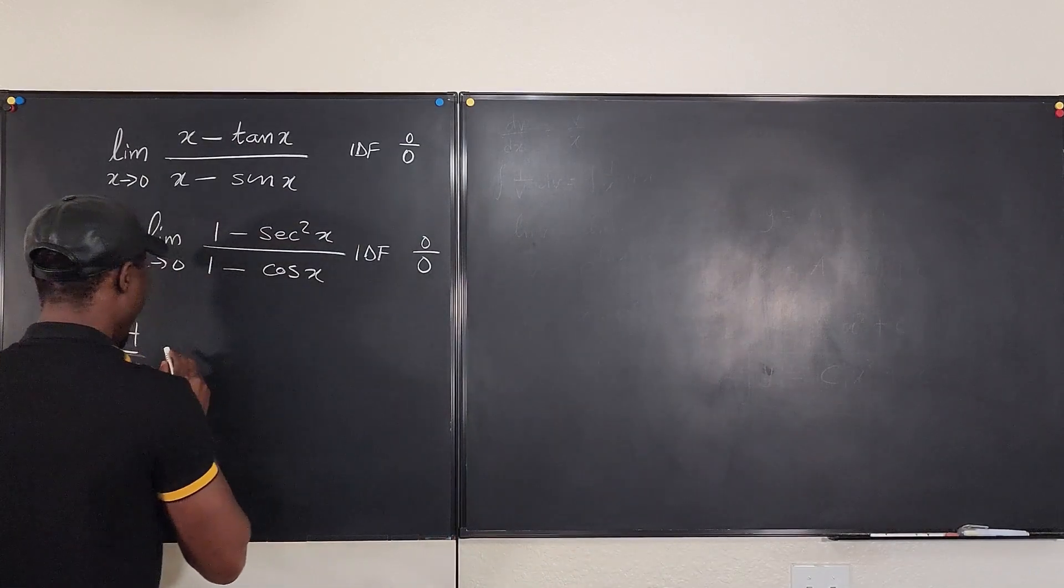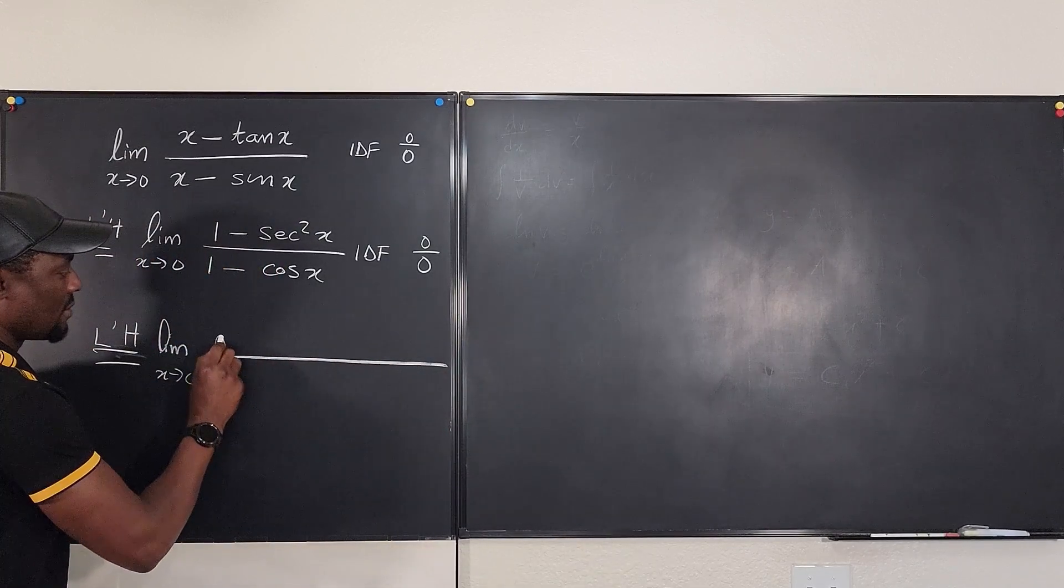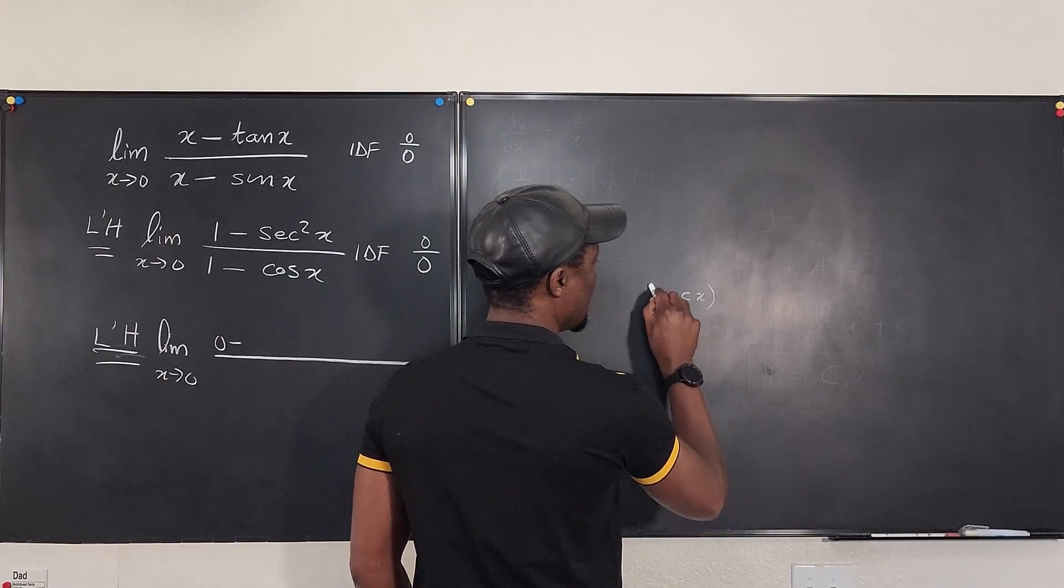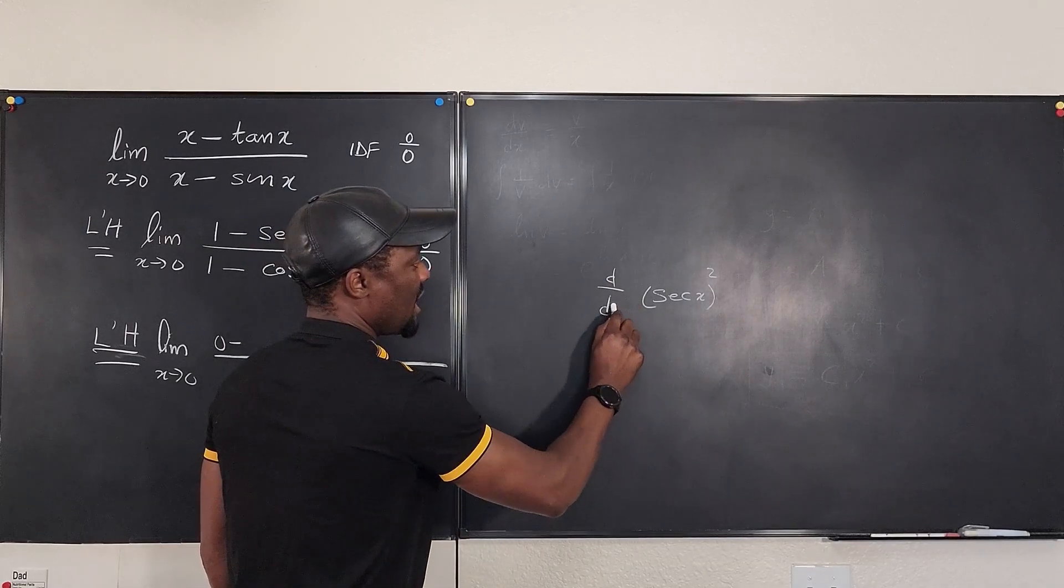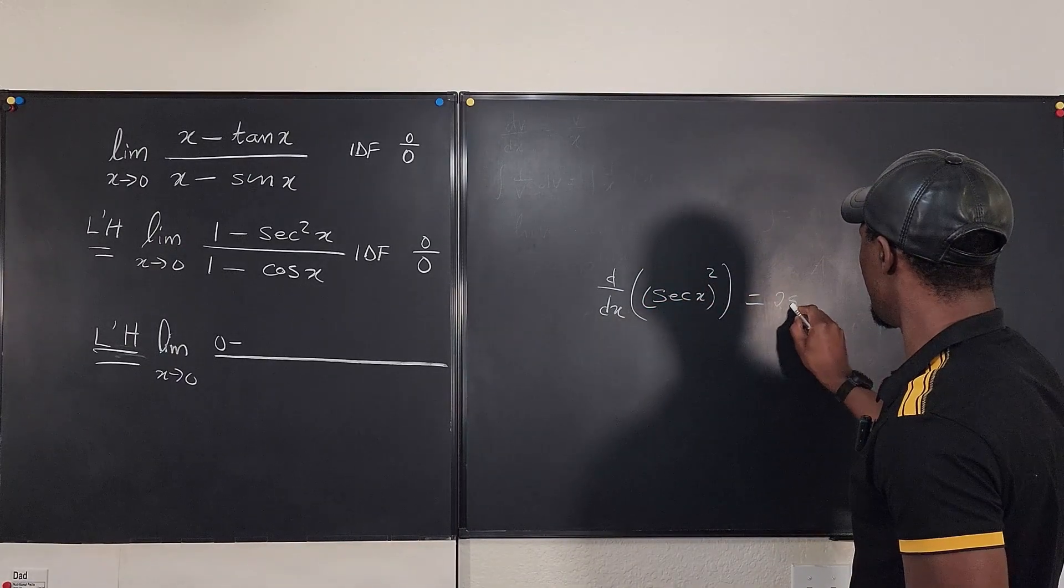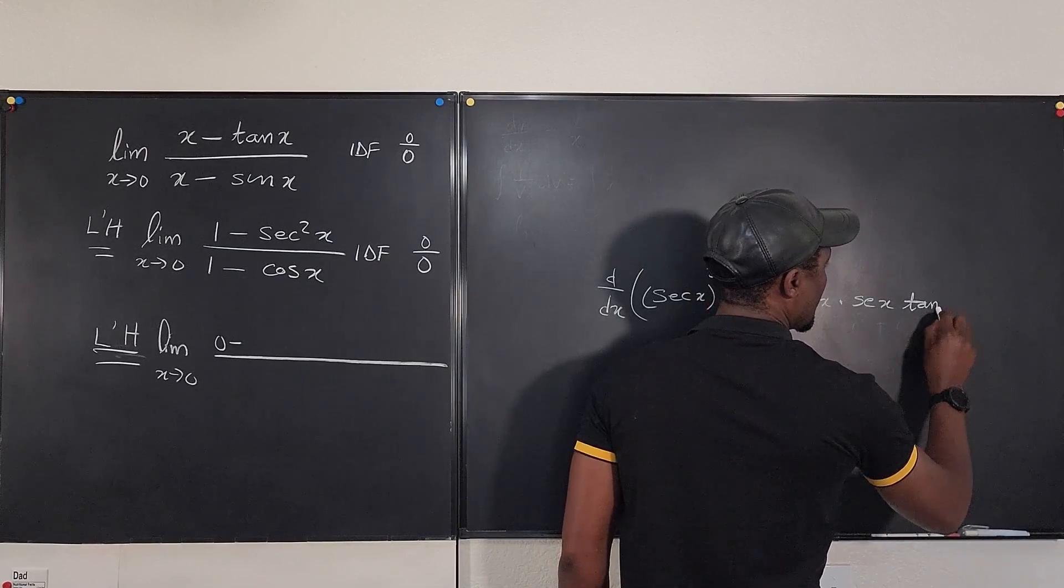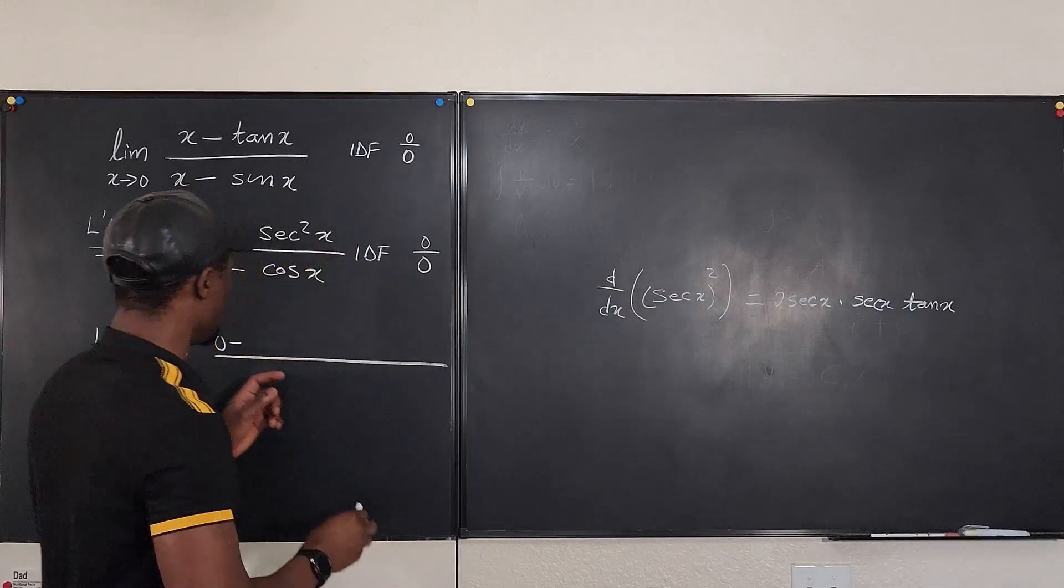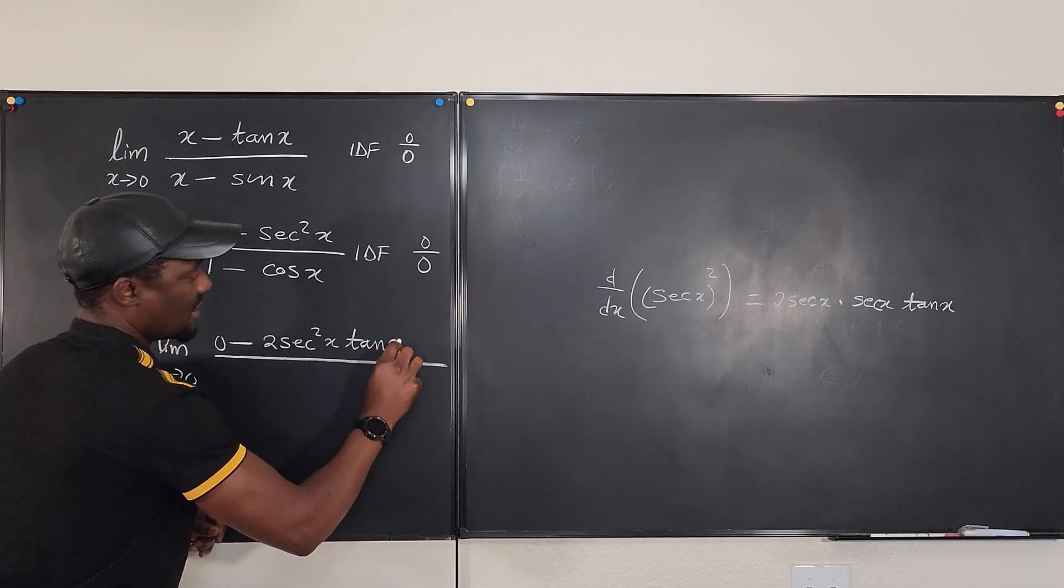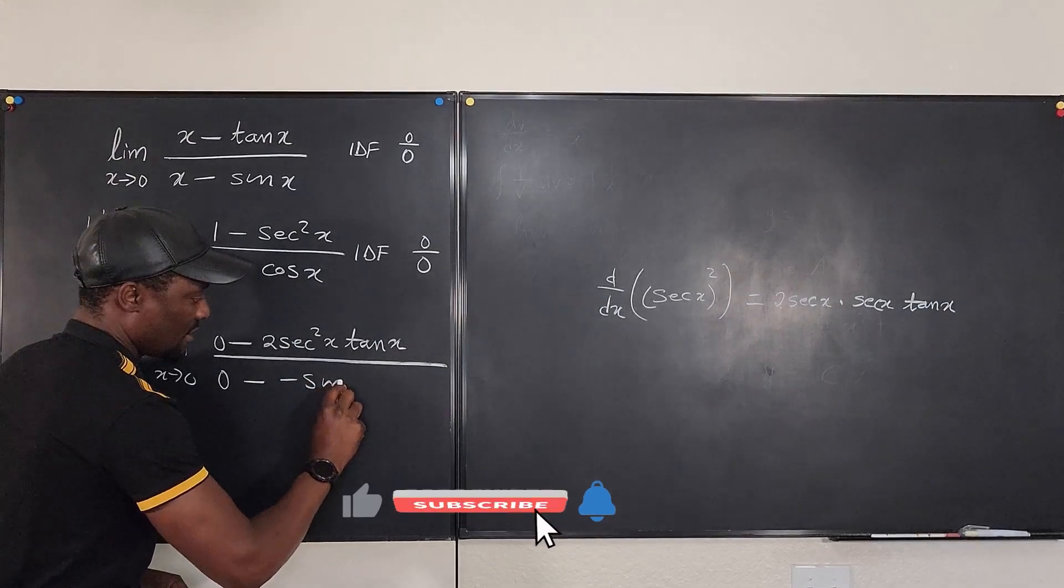If I take the derivative of the top, I'm going to have this is the limit as x goes to 0 of this is going to be 0 minus the derivative of secant squared x. Now this requires the chain rule. So we're going to say it's secant x squared. So if we take the derivative of this, what do we get? Well, apply the chain rule here. It's going to be 2 secant x multiplied by the derivative of secant x which is going to be secant x tan x. So this derivative is 0 minus 2 secant squared x tan x and for the denominator, it's going to be 0 minus the derivative of cos x is negative sin x.